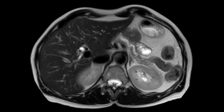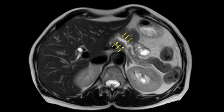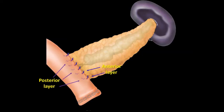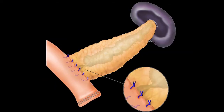MRI showed a complete stenosis of the pancreatic jejunostomy with pronounced dilation of the main pancreatic duct. In a closer look, we can see the anastomotic stricture.